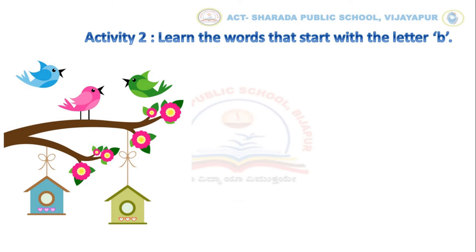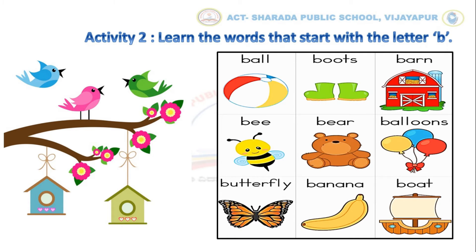Now let us do activity number 2. Learn the words that start with the letter B. Children, here you can see some of the B words. Can you identify these pictures? Ball, boats, barn, bear, balloons, butterfly, banana, bot. Children, keep practicing it.